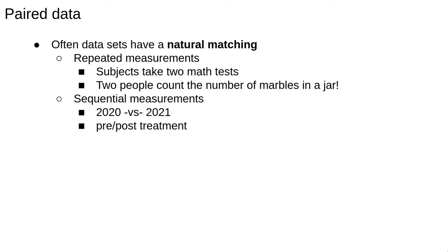A common source of paired data is sequential data. For example, comparing sales in 2020 in the same places to sales in 2021, or comparing pre- and post-treatment groups with the same people in each group.